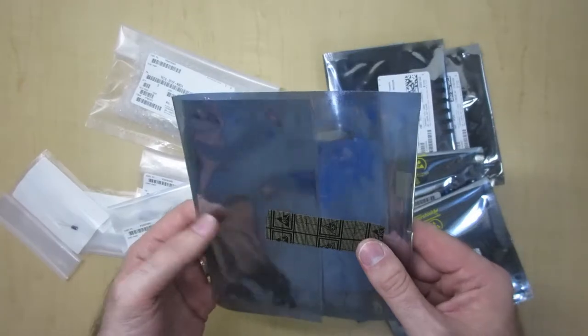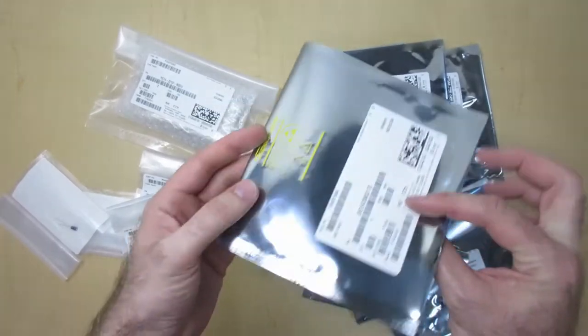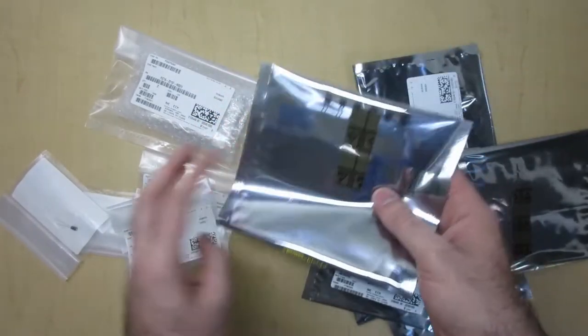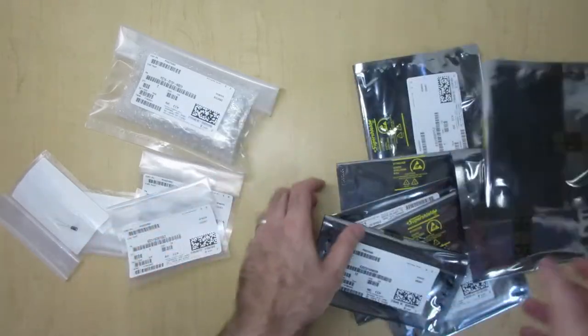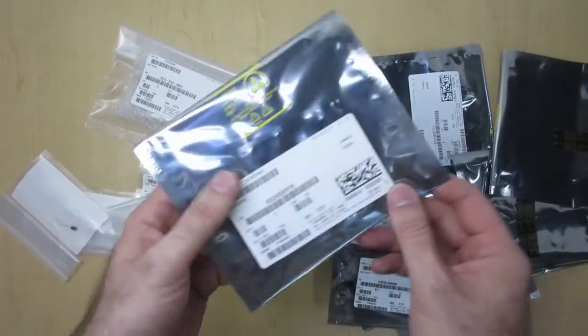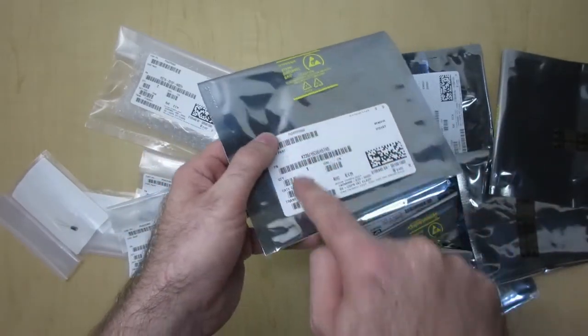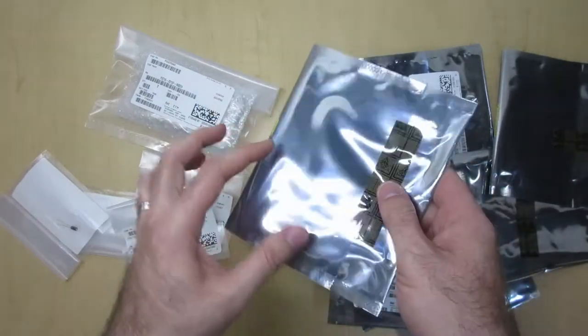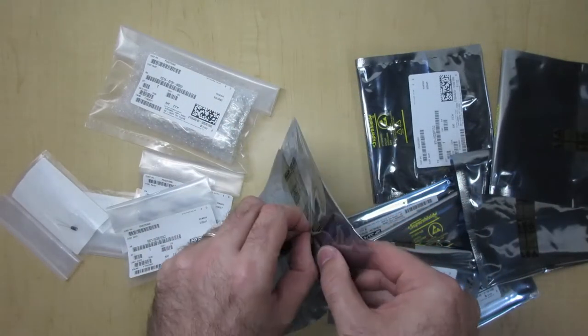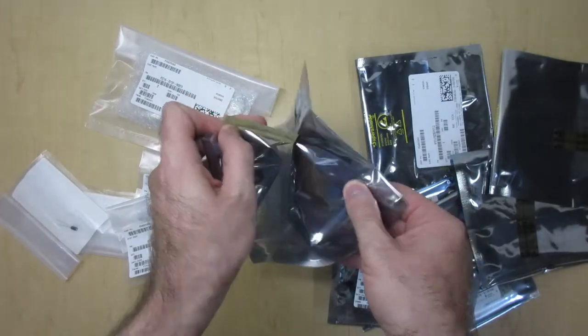So one thing that was kind of interesting, some of these bags have smaller bags in them. I've never seen that before. This guy here. So you might not be able to see that, but there is a smaller electrostatic bag on the inside. And I'm kind of curious what that is. So let's open this thing up.